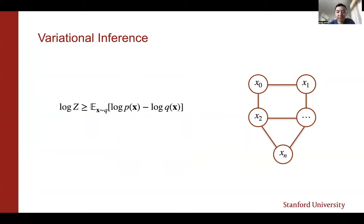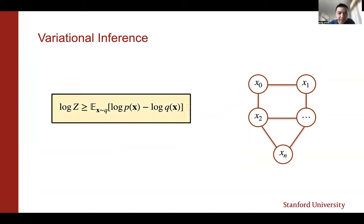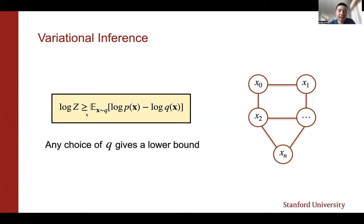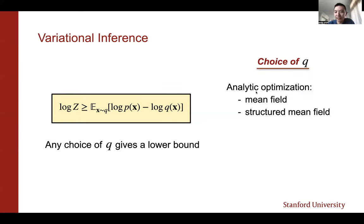With variational methods, p is your target distribution — you can query the graphical model to get the energy, so it's unnormalized. Q is the proposal distribution. If you evaluate this ELBO, the closer your proposal distribution is to the target, the better your estimate of the partition function. The goal is to learn an expressive distribution q that closely matches p. Any choice of q gives a valid lower bound, even a very coarse one. This means you can use methods like mean field, which does a fully factorized approximation, and still get a valid lower bound.